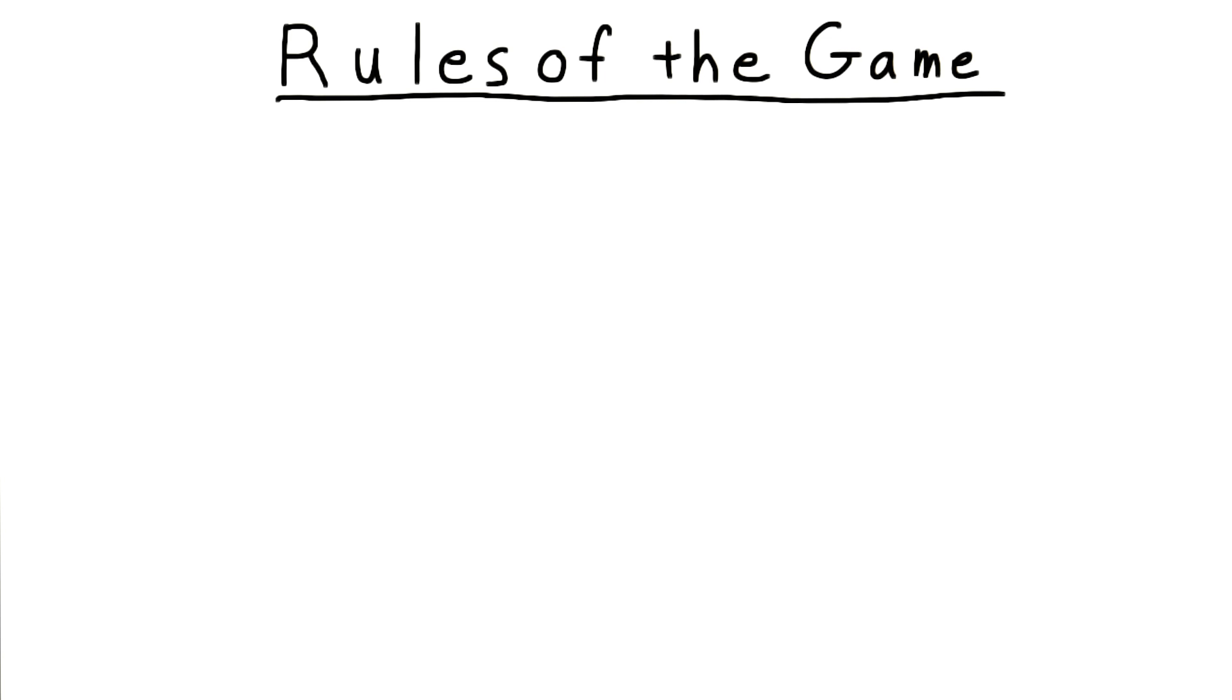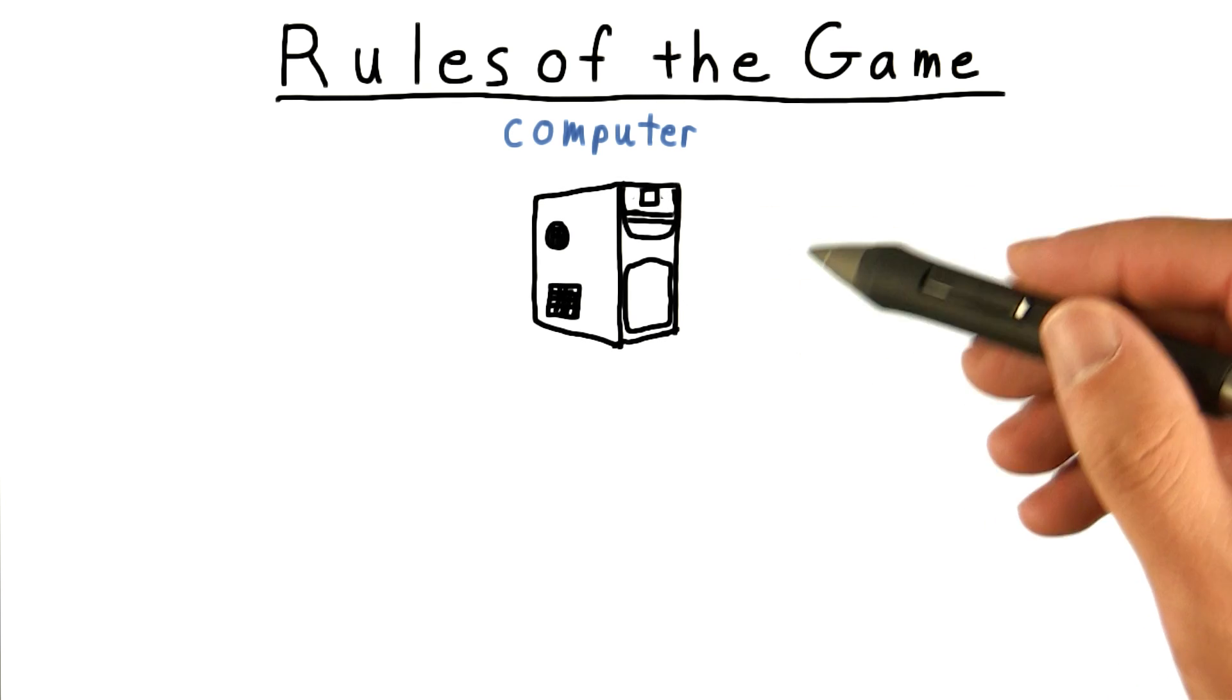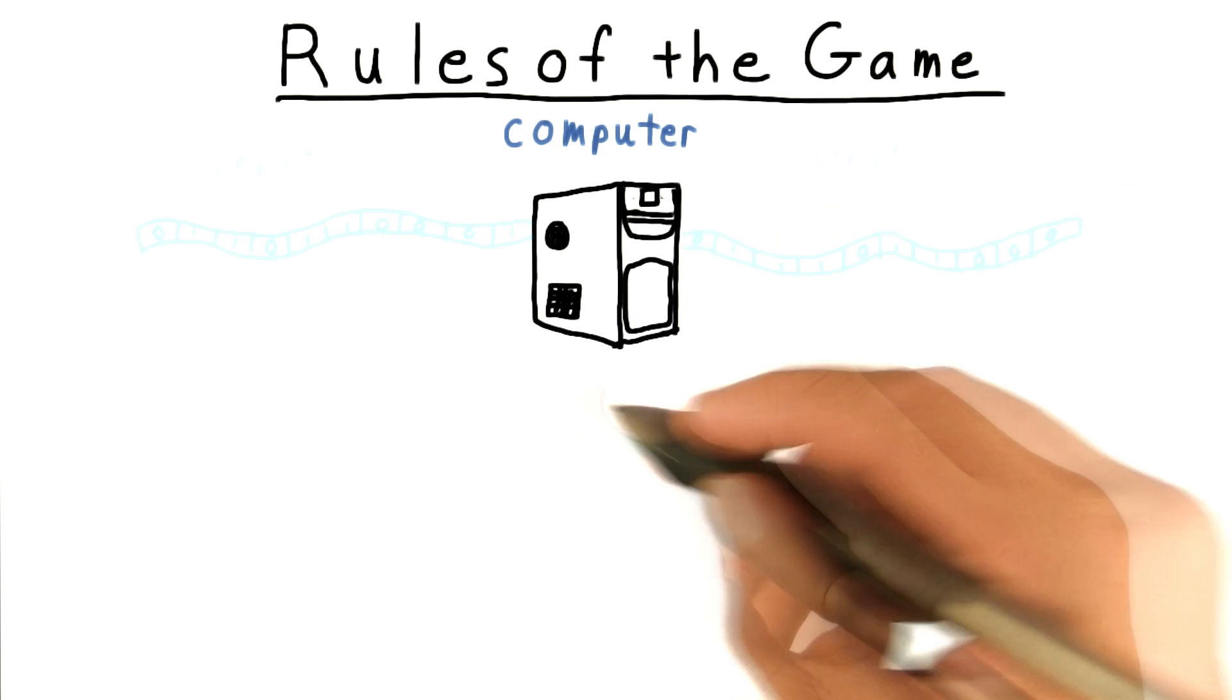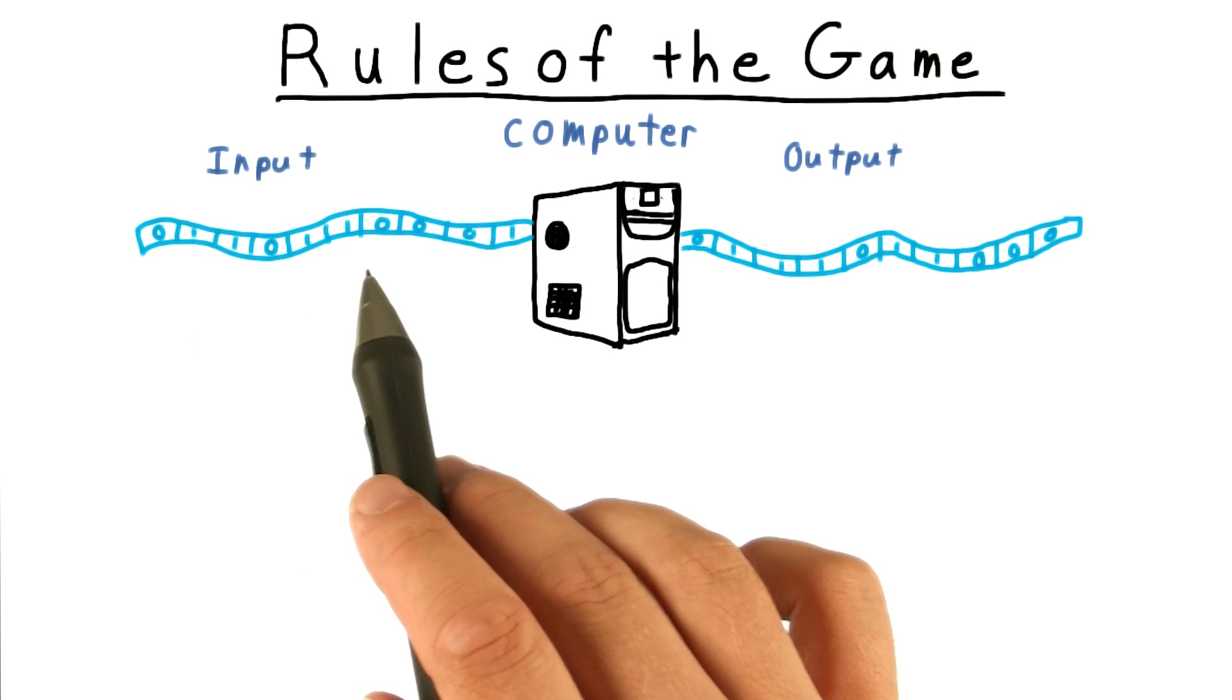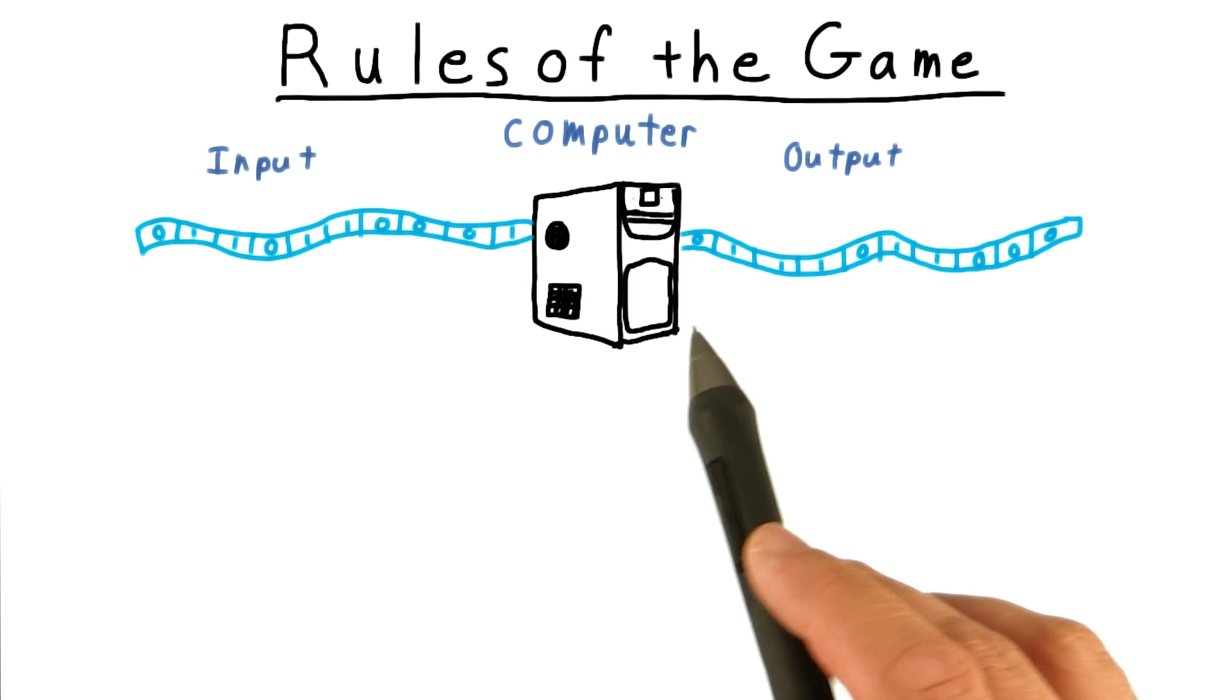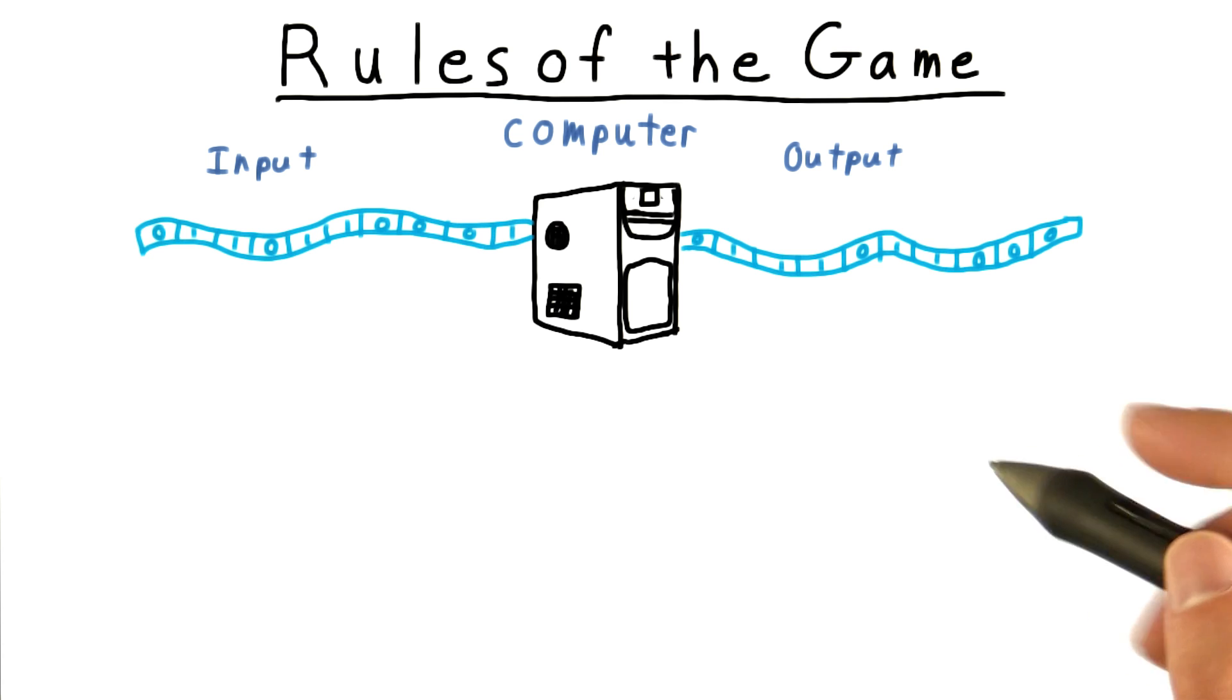Before we can make precise statements about what is and is not computable, we need to define what we mean by computation. We'll start with the notion of some kind of machine or computer, and this machine takes in an input and after some finite amount of time, produces an output, or so we hope.